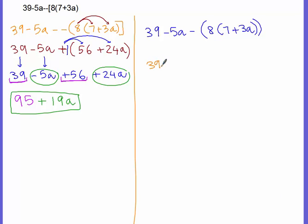So, 39 minus 5a. 8 times 7 is 56. 8 times 3, that would be 24a. Again, there is a 1 right here always. We're going to move on, take care of parentheses first.